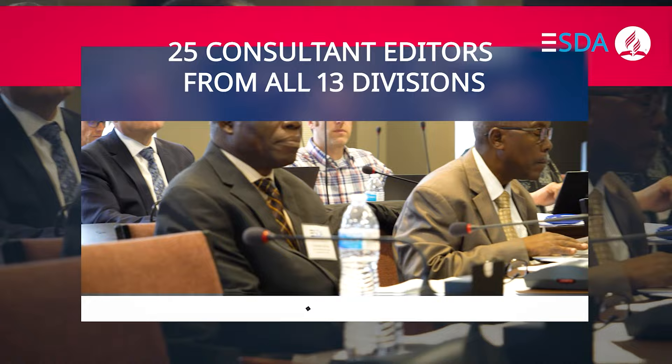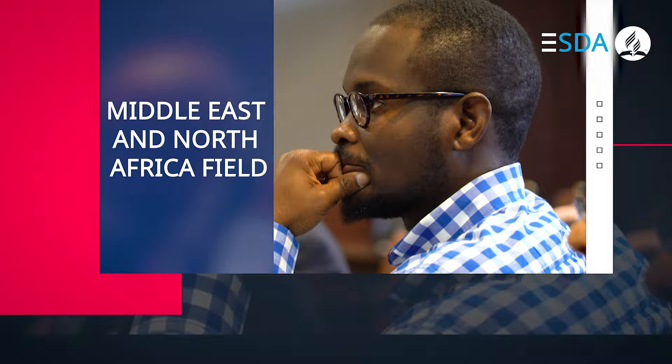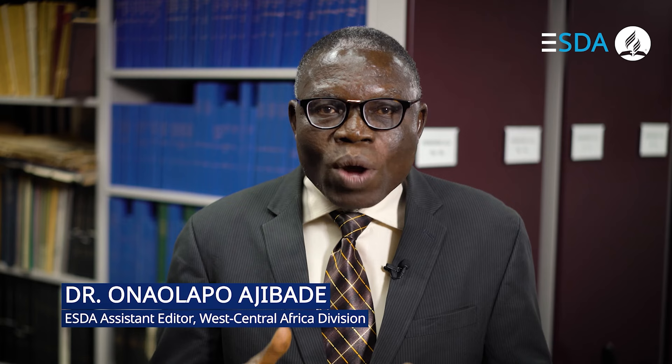About 30 assistant editors and research assistants, and 25 consultant editors from all 13 divisions, the Middle East and North Africa field, and the General Conference work on the Encyclopedia. The advantage of worldwide involvement is that editors and authors can collect materials from their local churches, such as letters and diaries that members keep and never think of sharing unless asked. They can also collect information based on oral tradition by conducting interviews with surviving relatives or people who know about specific historical events.